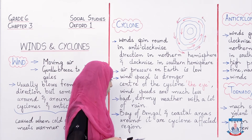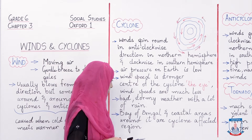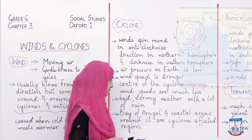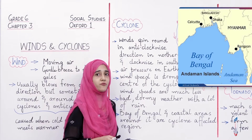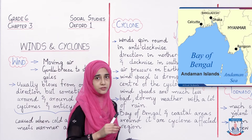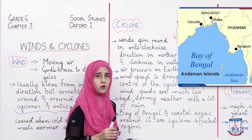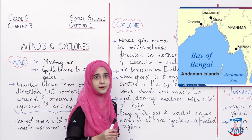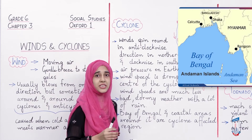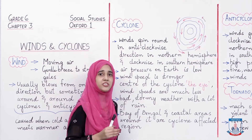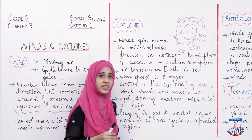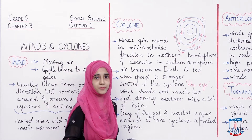The Bay of Bengal and coastal areas around it are cyclone-affected regions. Bacho, Bay of Bengal aur uske aas-paas ke coastal areas mein normally cyclones aa jaate hain, aur in areas mein kaafi destruction hoti hai cyclones ki waja se.